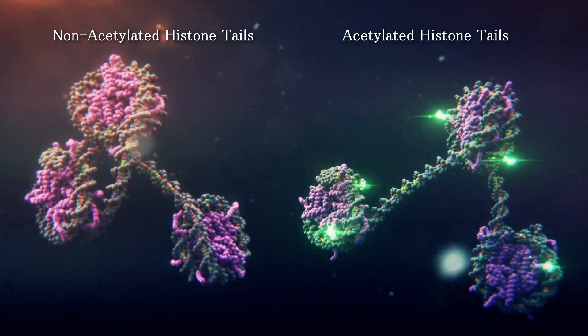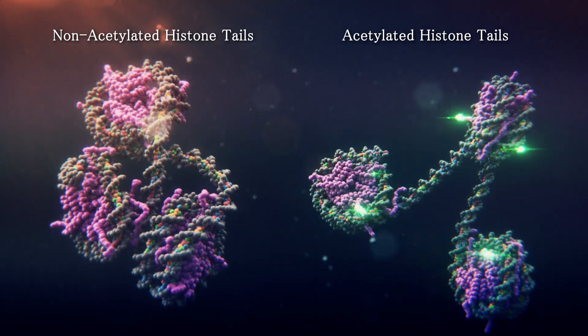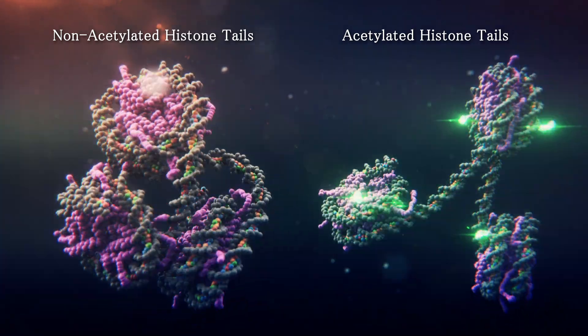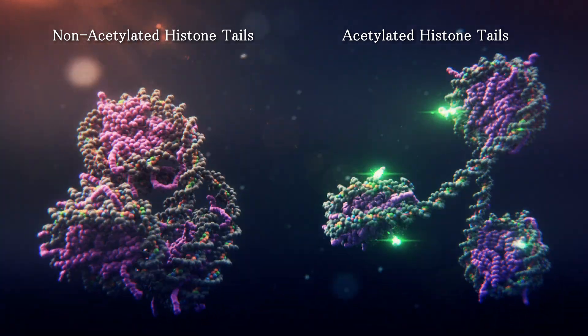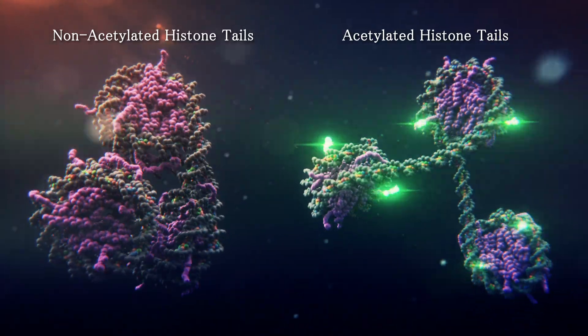For instance, we know that acetylation of specific parts of the histone tails loosens the chromatin structure, making the nucleosomes less tightly packed.